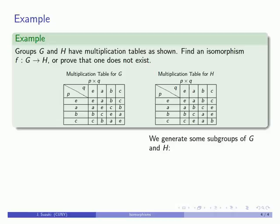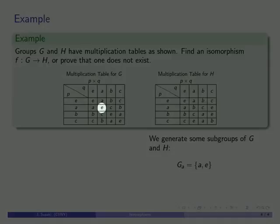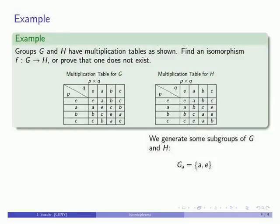To see if I can find an isomorphism between the two groups, let's generate some subgroups of G and H. I'll generate the subgroup of G that is generated by A, and A times A takes us back to the identity. So this subgroup only consists of the elements A and E. It is a subgroup with two elements. So I'll look in H for a subgroup with two elements.